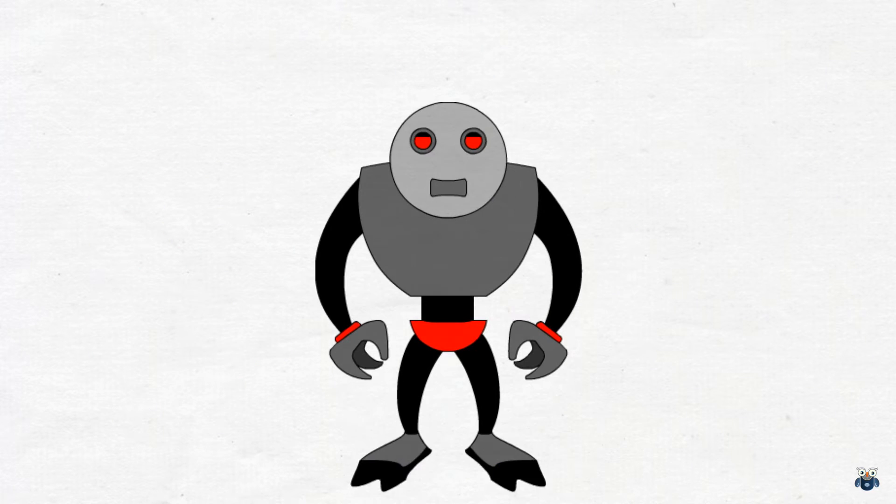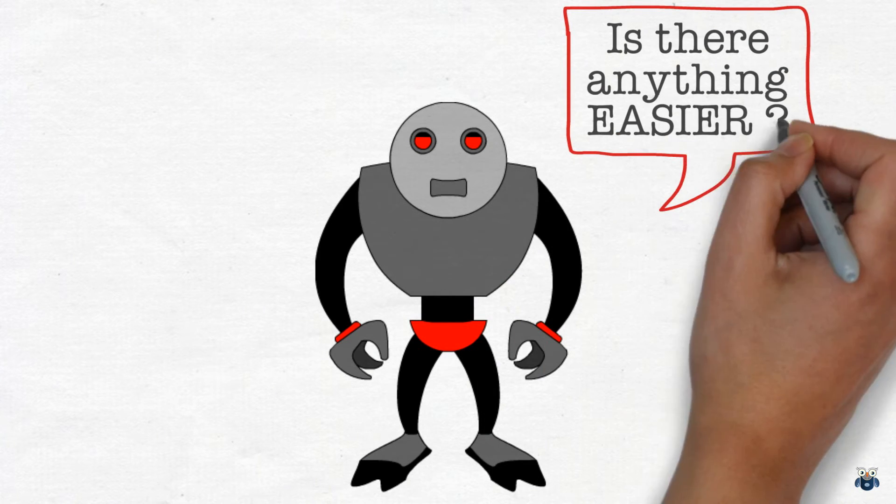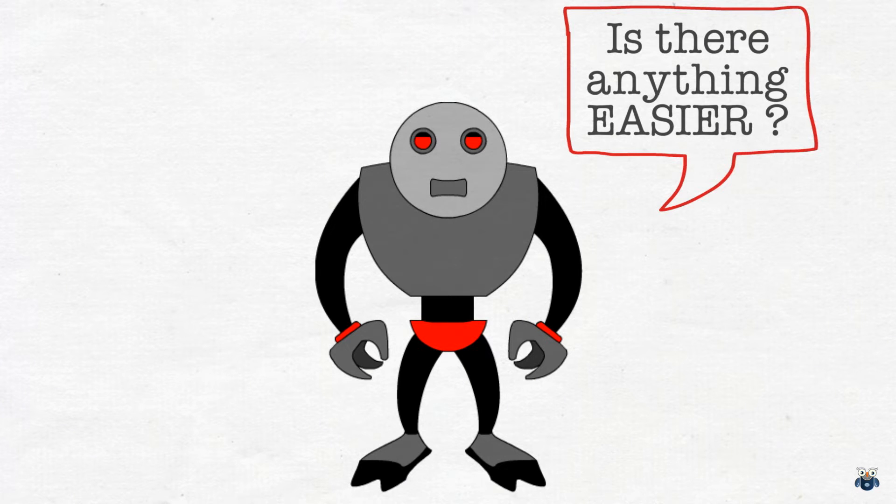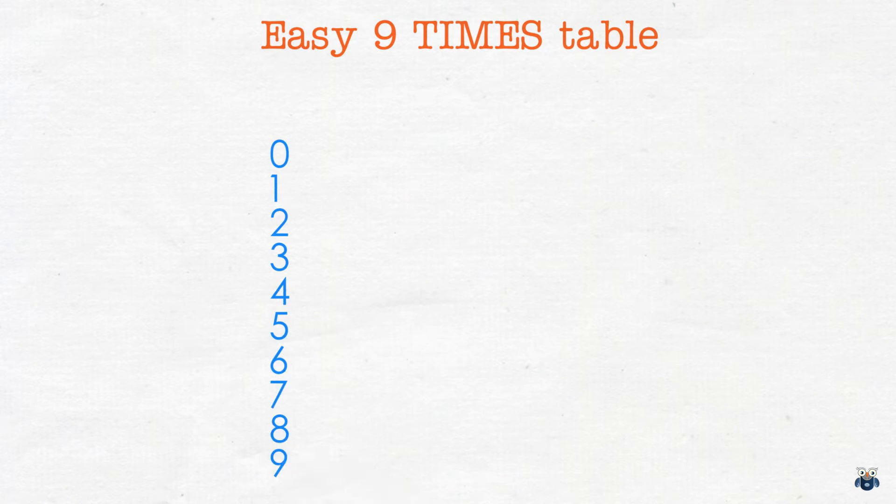But there is an even easier way to write the 9 times tables without memorization and without using your fingers. First write down the numbers from 0 to 9 starting from 0 and moving all the way to 9. Now repeat these steps but this time start from the bottom and move upwards like this.